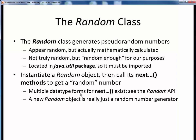There are multiple forms of the next methods, depending upon what data type of random numbers you're after. You can take a look at the API for the Random class to see all these, but we will primarily concern ourselves with the random integer forms. When all is said and done, a new random object is really just a random number generator in our programs. Let's take a look at how to create one, and then how to use it.